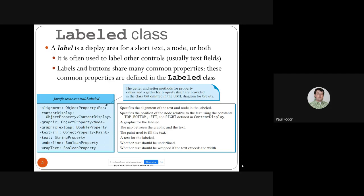Labeled also has a graphic property, which is a JavaFX node — it can be an image view. Text fill specifies the paint used to fill the text. The text itself is the label's text. Underline is a Boolean property that specifies if the text is underlined or not — by default it's false. Wrap text specifies that if the text exceeds the width of the current node, it wraps and continues on the next line.